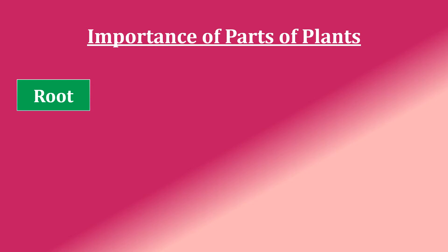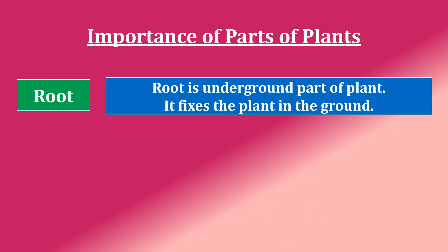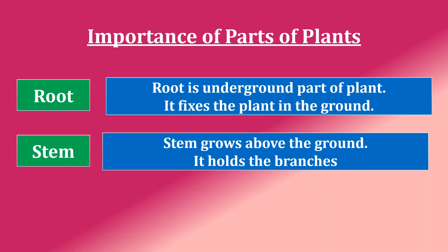Root. Root is the underground part of the plant. It fixes the plant in the ground. Stem. Stem grows above the ground and it holds the branches. So you can see the differences — root is the underground part of the plant, and stem is the external part which stands above the ground.